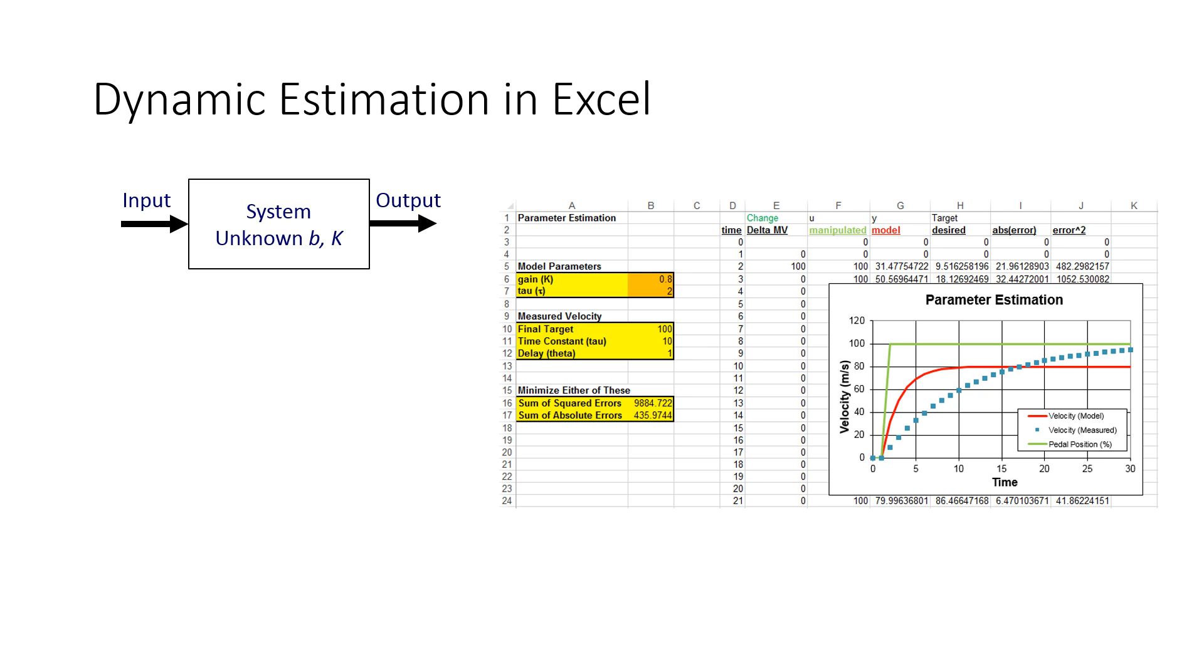So we're going to work an example in Excel. That will be the following video. I just want to show kind of an overview of this. We're going to adjust these model parameters right here to try to match up the model value of velocity to the measured value. Let's say we took some measurements.